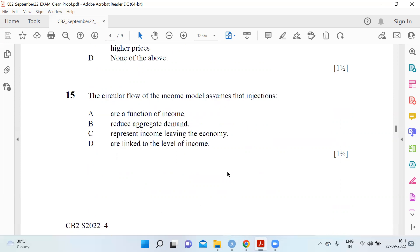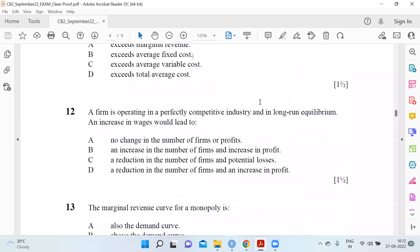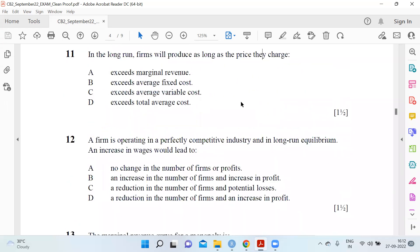Question eleven: In the long run, firms will produce as long as the price they charge exceeds the average variable cost. Eleven is C. A firm operating in a perfectly competitive industry in long run equilibrium - an increase in wages would lead to a decrease in the number of firms.